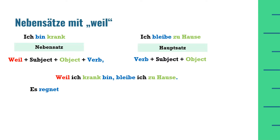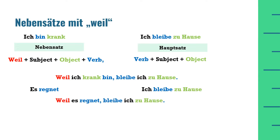Now let's look at the next example: 'Es regnet' — it's raining — 'Ich bleibe zuhause'. The Hauptsatz is the same sentence 'Ich bleibe zuhause', but the reason is different — in the first sentence the reason was that I am sick; in the second sentence the reason is it's raining. Following the same sentence structure: 'Weil es regnet,' then a comma, and the Hauptsatz 'bleibe ich zuhause'. Full sentence: 'Weil es regnet, bleibe ich zuhause.'